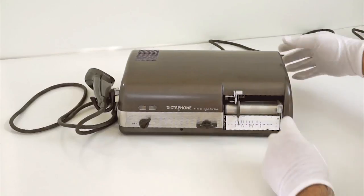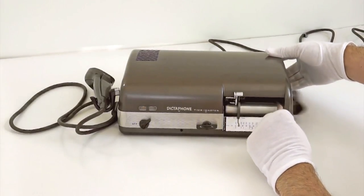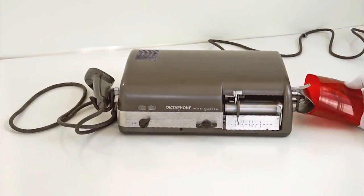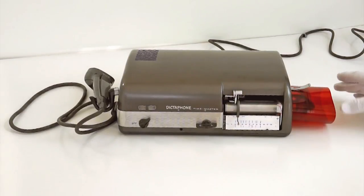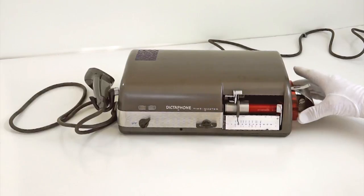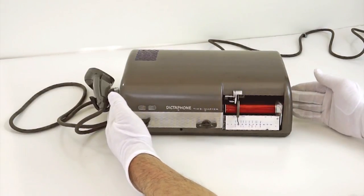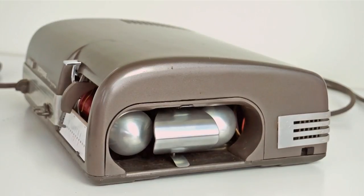The Dictabelt is inserted by pushing it around the guides. The machine is then ready for recording. The Dictabelt is then stretched between two rollers and set in motion.